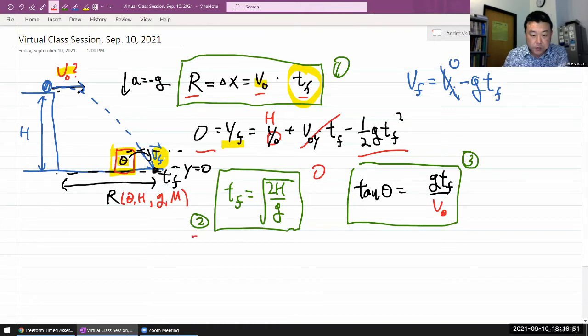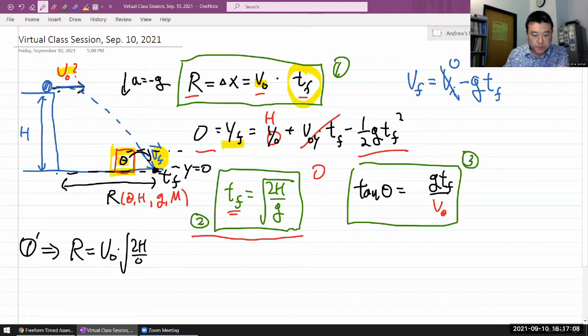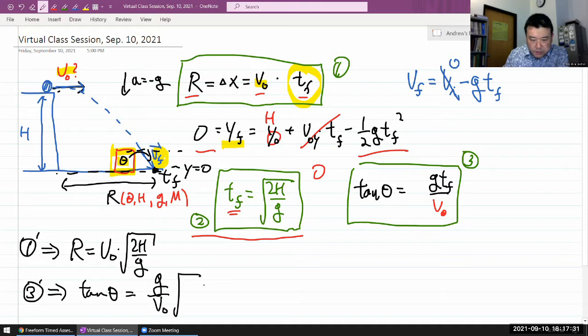I think the most natural way to do this is I can use equation two to eliminate t final from every other expression. So that will give me one prime: R is equal to v naught times square root of two H over G. Let me plug T final into three. So three prime becomes tangent of theta equals G over V naught square root of two H over G. I can think of this as G squared square root of G. So with that, I can say square root of two H G over V naught is equal to tangent theta.